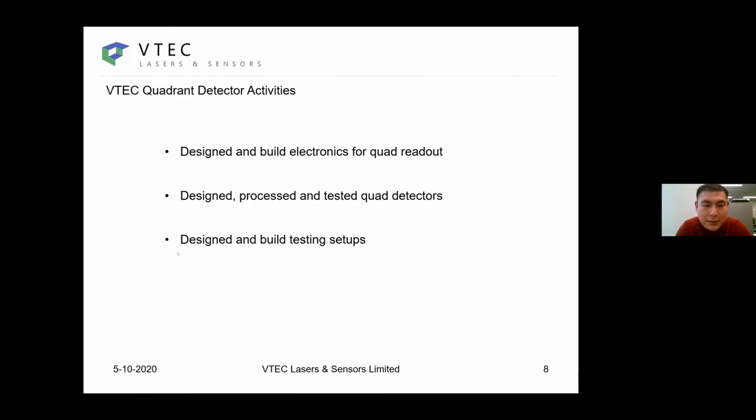Next I'll talk about the activities that we have for developing such a device. We designed and built electronics for reading out the current of the quadrant detector, which is basically the transimpedance amplifier and ADCs controlled by a controller. We designed the core detector and had it processed in a wafer fab. We got the device and tested some of the characteristics. We built up the test setup in house by ourselves.